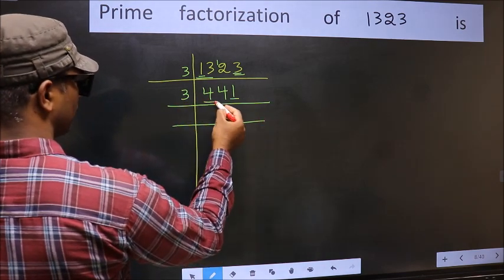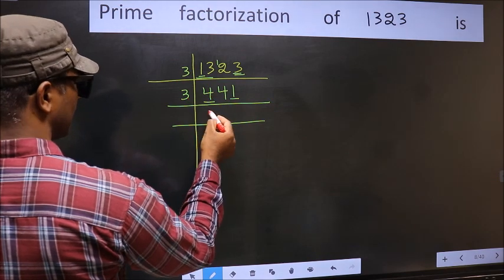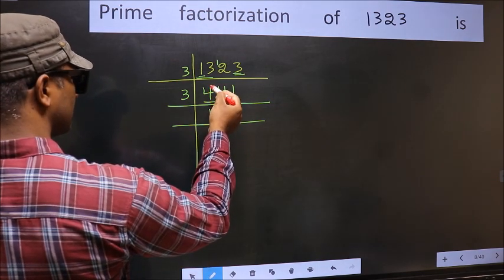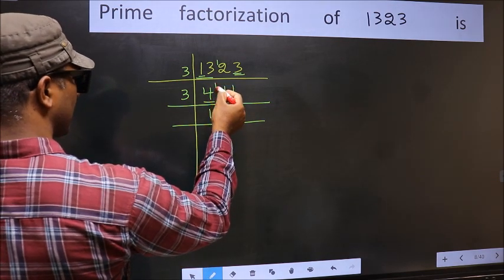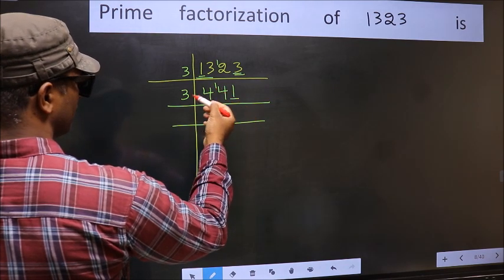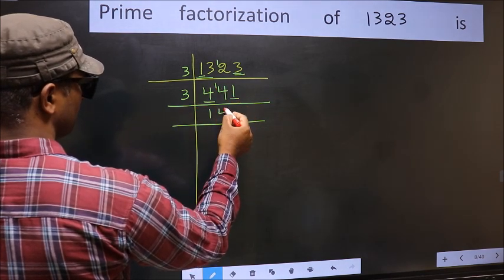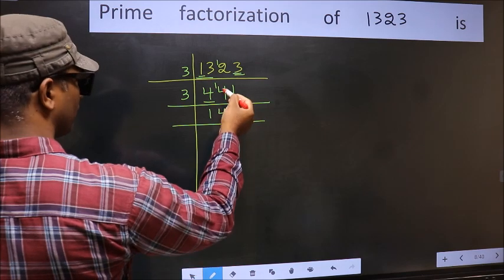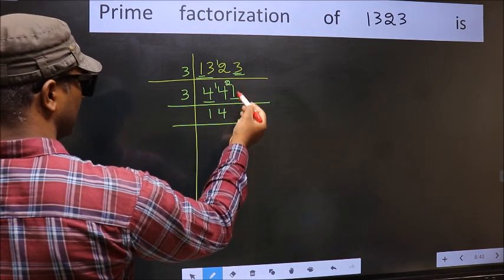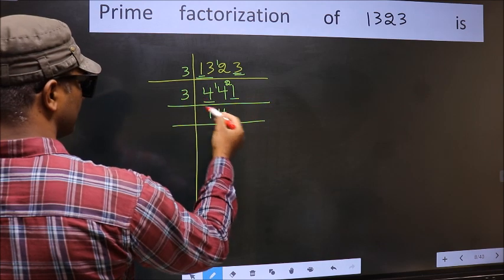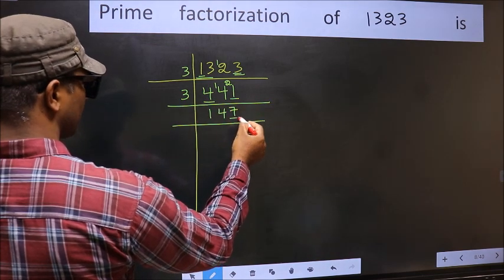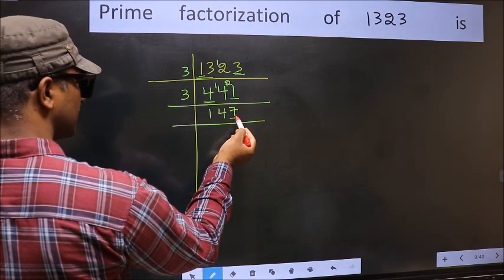First number 4. A number close to 4 in the 3 times table is 3×1=3. 4 minus 3 is 1, carried forward: 14. A number close to 14 in the 3 table is 3×4=12. 14 minus 12 is 2, carried forward: 21. We get 21 in the 3 table as 3×7=21.